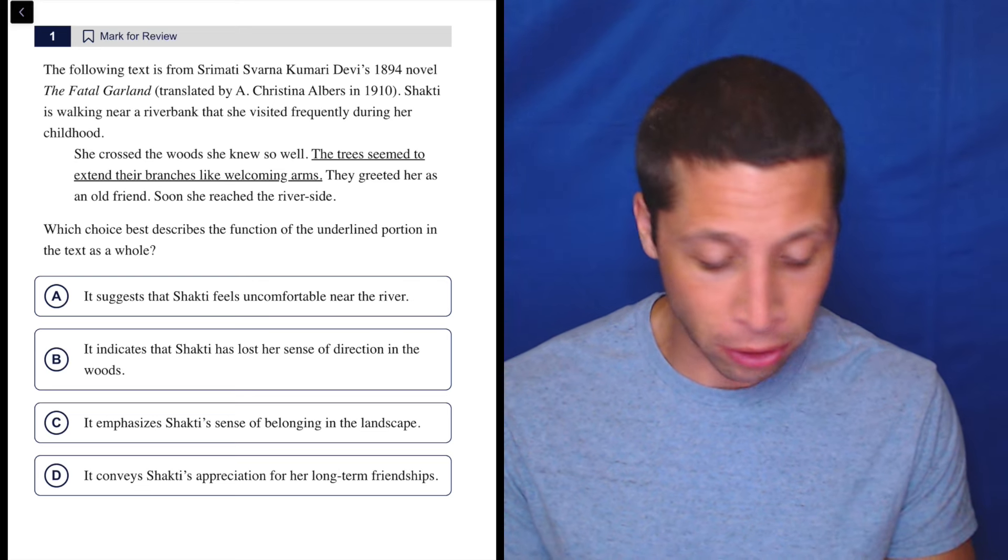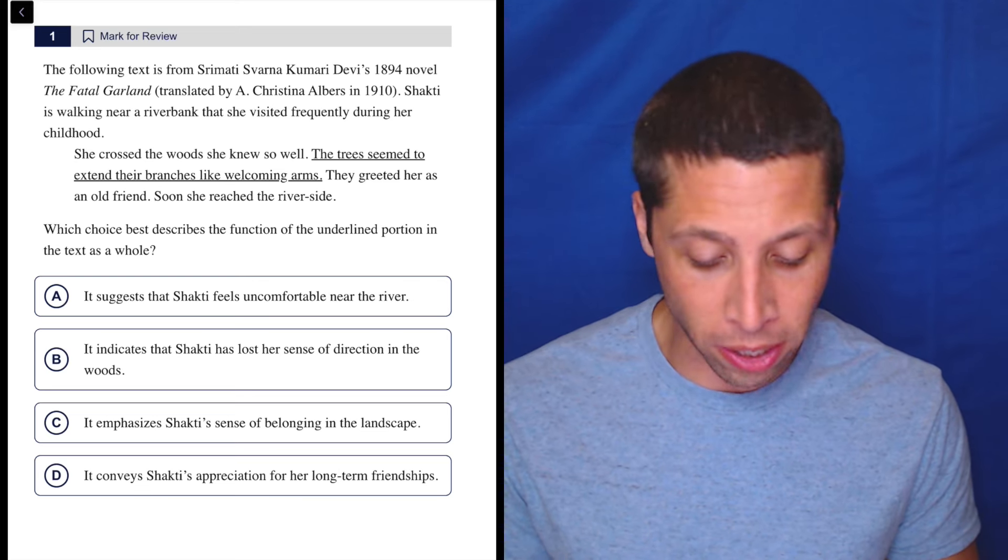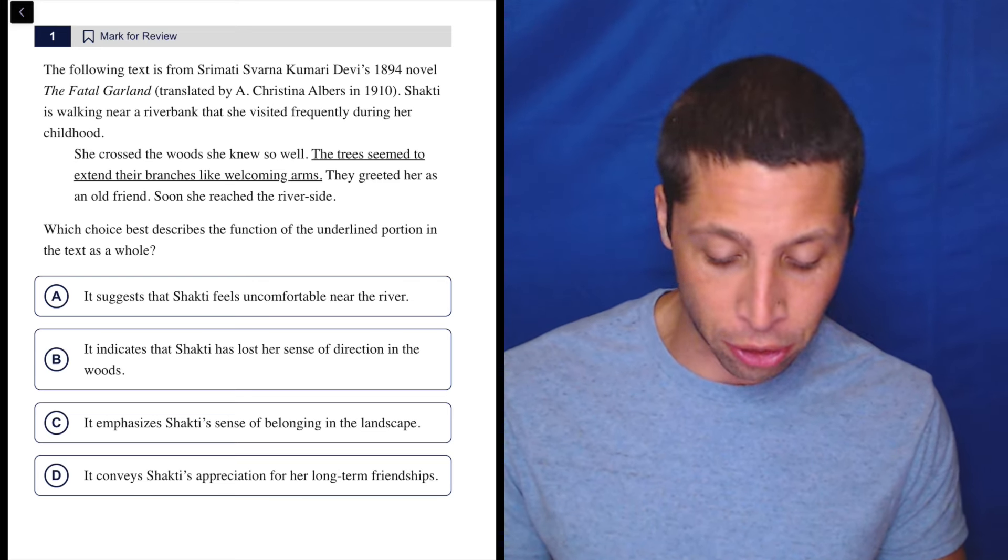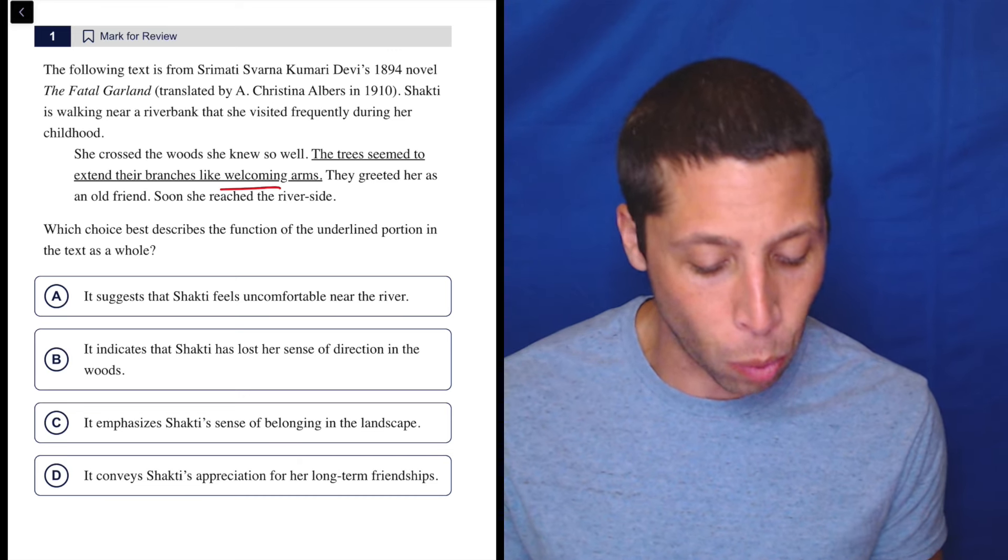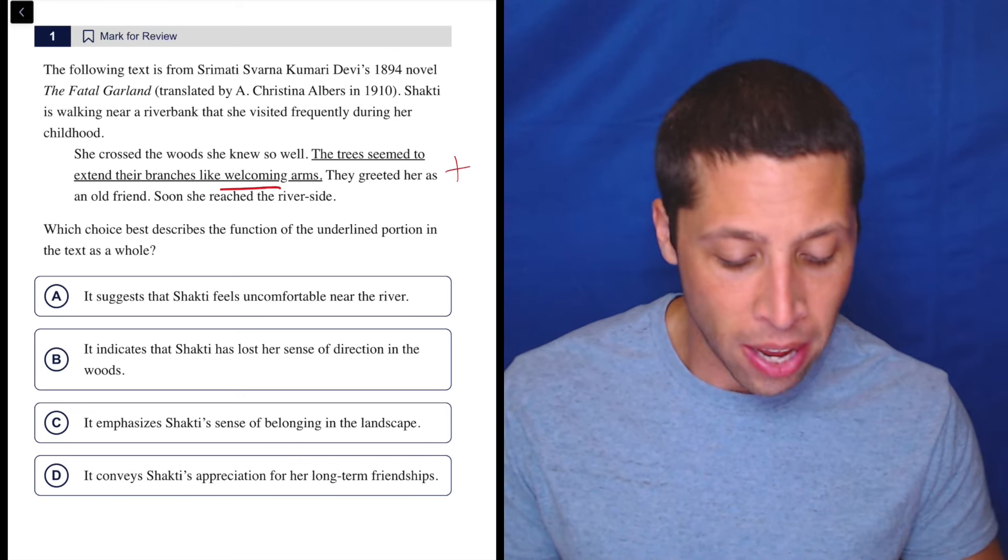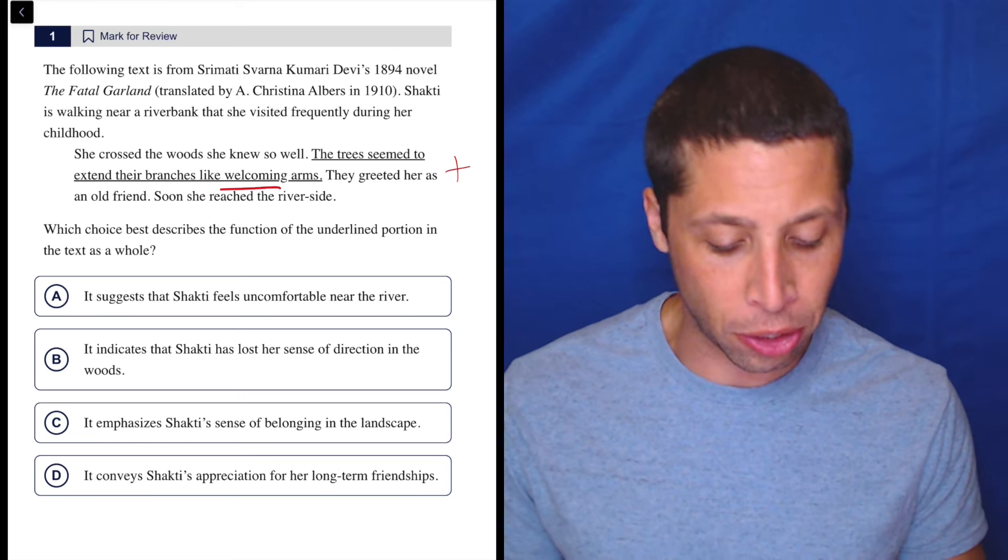Here we have a very short passage. Shakti is walking near a riverbank that she visited frequently during her childhood. She crossed the woods she knew so well. The trees seem to extend their branches like welcoming arms - see, that seems pretty positive. They greeted her as an old friend. Soon she reached the riverside.